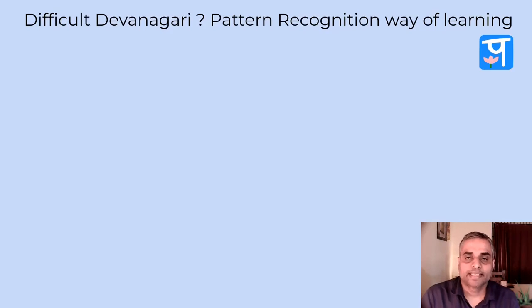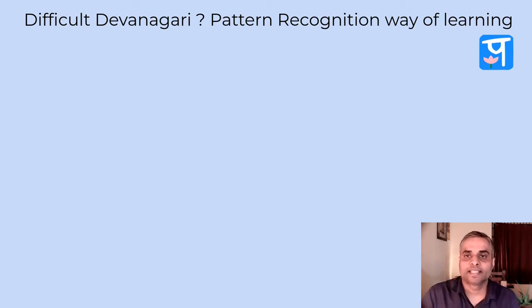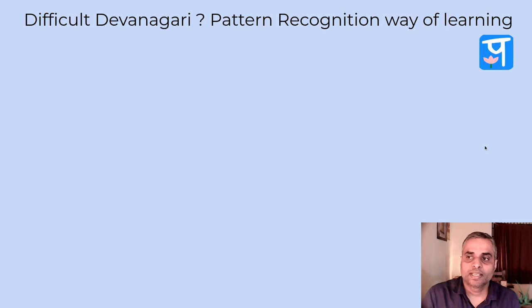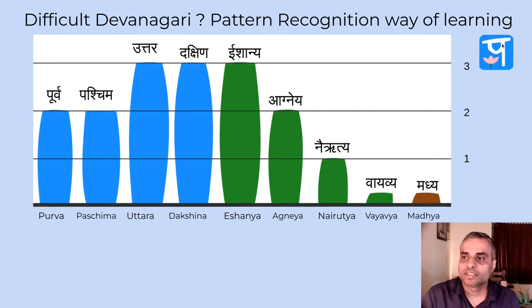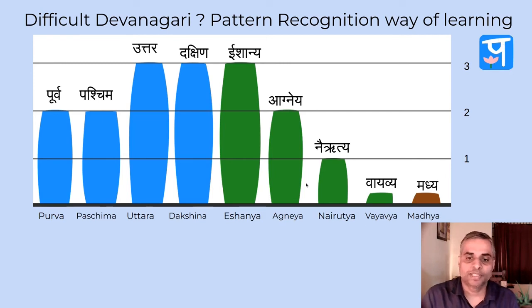Whenever Sanskrit has to be learned, people find difficulty in understanding Devanagari. Is there a way of learning it faster? I call it the pattern recognition way of learning. What you see on the screen is an image created using Parashar, which is a Sanskrit programming and coding environment, and using this we have created this image.